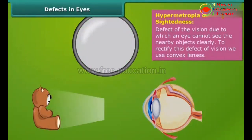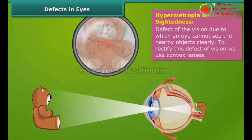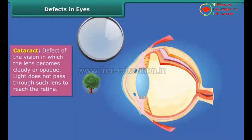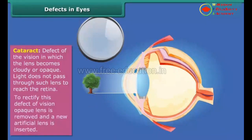Hypermetropia or long-sightedness: A defect of vision due to which an eye cannot see nearby objects clearly. To rectify this defect, we use convex lenses. Cataract: A defect of vision in which the lens becomes cloudy or opaque. Light does not pass through such a lens to reach the retina. To rectify this defect, the opaque lens is removed and a new artificial lens is inserted.